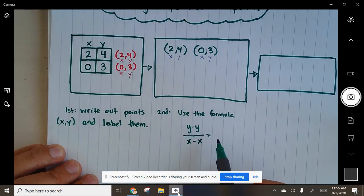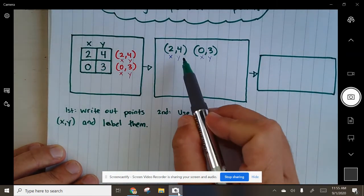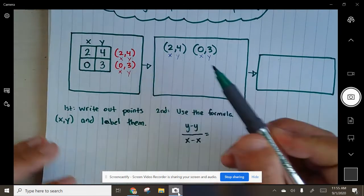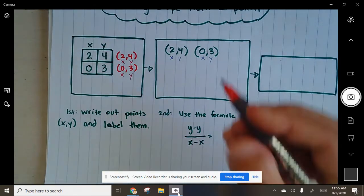The way you have to do this though is consistent. You always have to choose the farthest left y minus this y and then this x minus this x. If you do it backwards, it's going to mess it up. So just go from left to right.